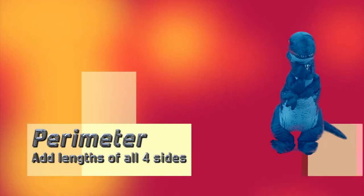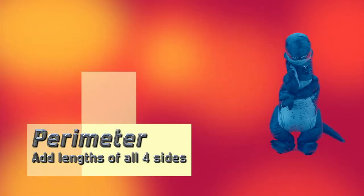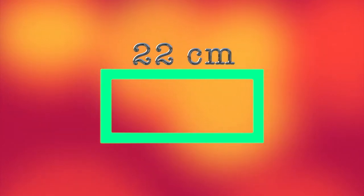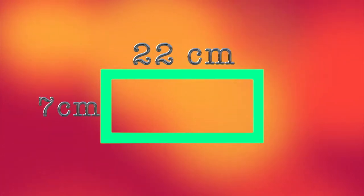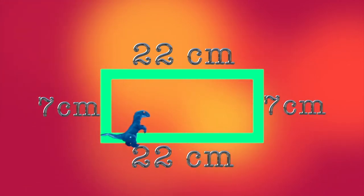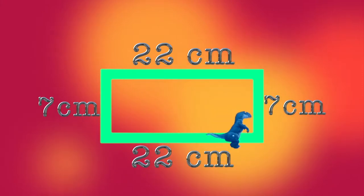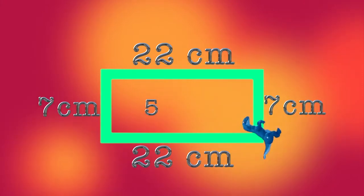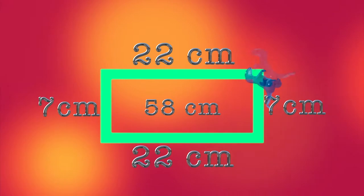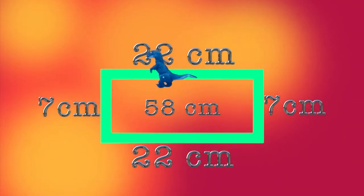To find the perimeter of a shape, you add up all the measurements of all the sides, like this. This rectangle measures 22 centimeters on the long side and 7 centimeters on the short side. Since it is a rectangle, we know that the sides across from each other are the same. When you add up all four numbers, your sum equals the perimeter — that's the distance Shape-O-Saurus will have to go if she walks along the edge of the shape all the way around it.